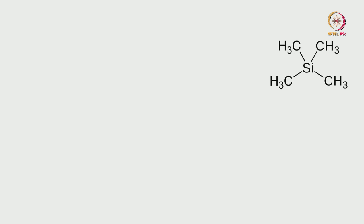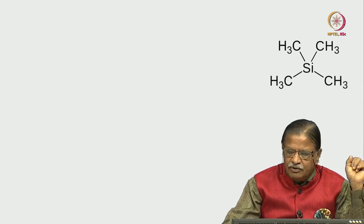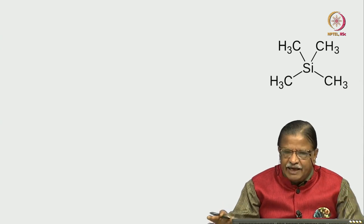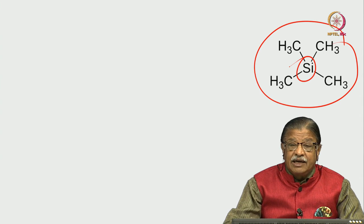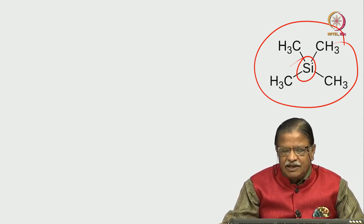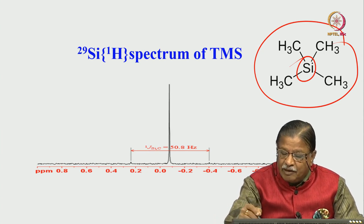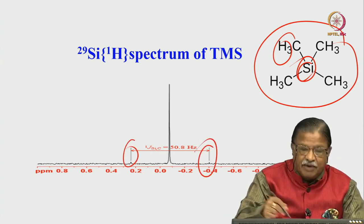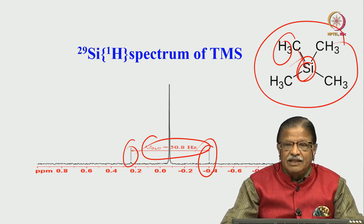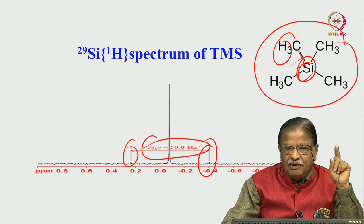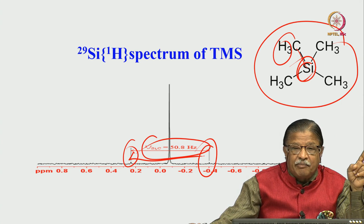Let us look at the silicon NMR of tetramethylsilane (TMS). How many peaks do we expect? It depends on whether you do proton-decoupled or proton-coupled silicon NMR. With all 12 equivalent protons completely decoupled, we get a singlet. In the decoupled spectrum, you see weak satellite peaks on either side — these come from carbon-13 coupling to silicon via a one-bond direct coupling. Four equivalent carbons are there. So you get a single doublet — carbon coupling to silicon appears as satellites.